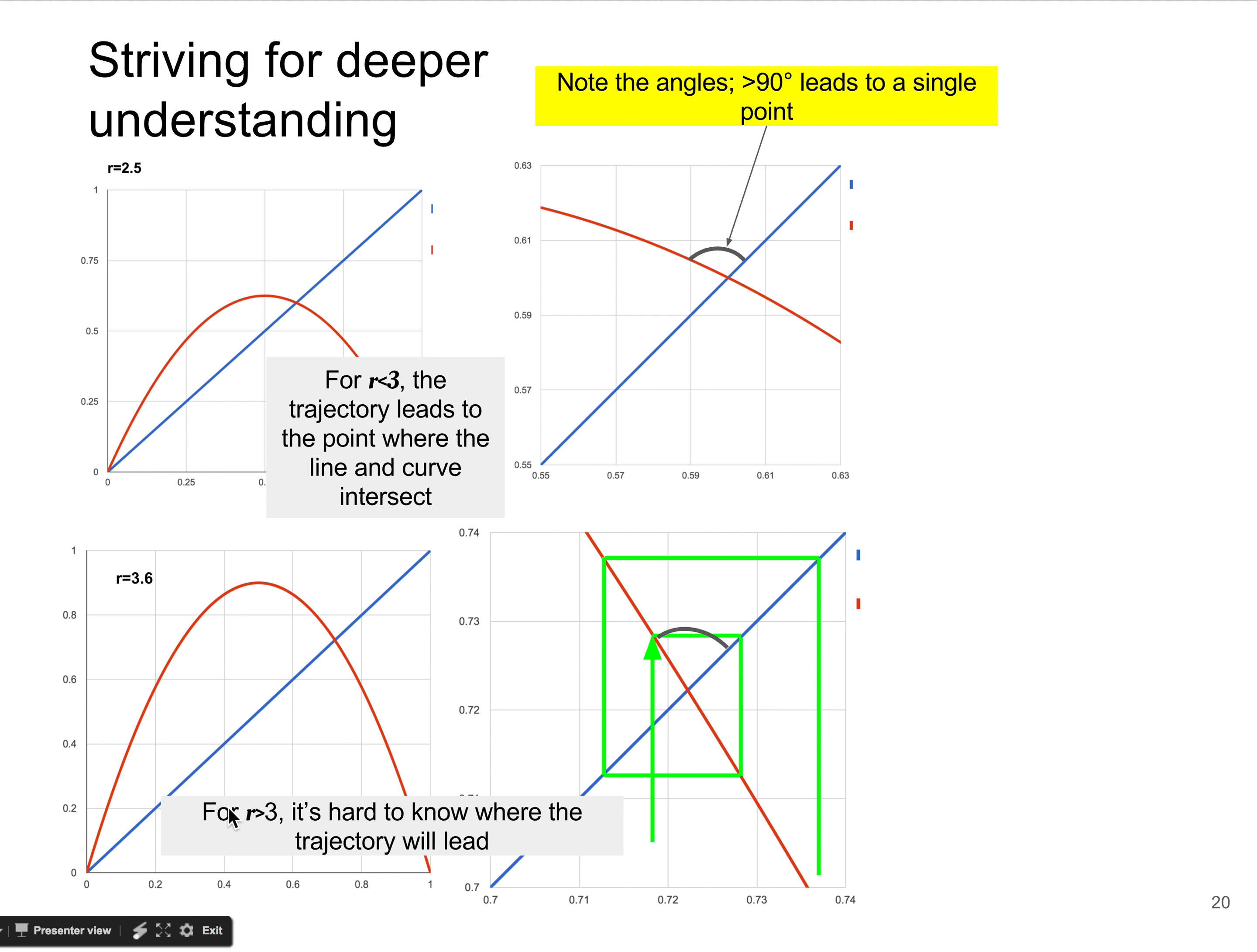And what is that that happens? And we've already said, for r greater than 3, it's hard to know how the trajectory is going to unfold. So why is 3 critical? So it turns out, and we're going to work through this, that the slope of the logistic curve at the intersection with the straight line is critical to determining how the trajectory progresses. And why is that so? So let's say we already had calculated the slope of the logistics curve everywhere is equal to r minus 2rx.